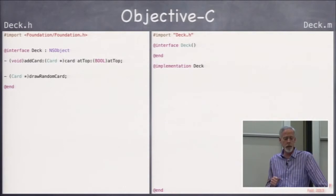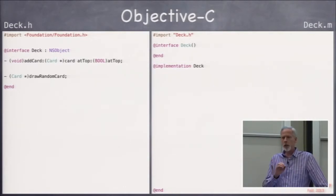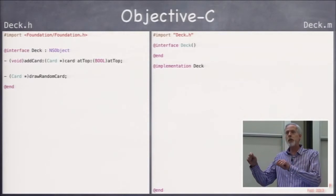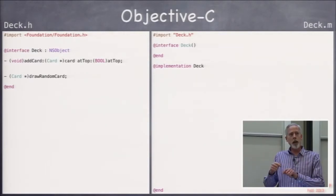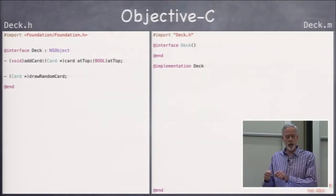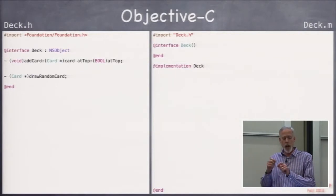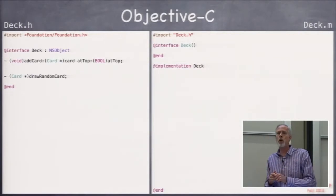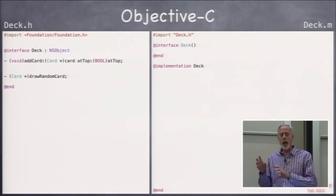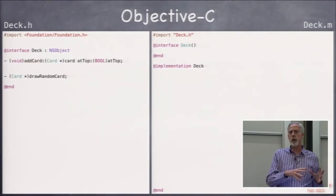Match had one argument, or the setters, they also have one argument. When you have multiple arguments in Objective-C, they're kind of interspersed with the names of the method. So the name of this method is addCard:atTop: That's the name of this method.